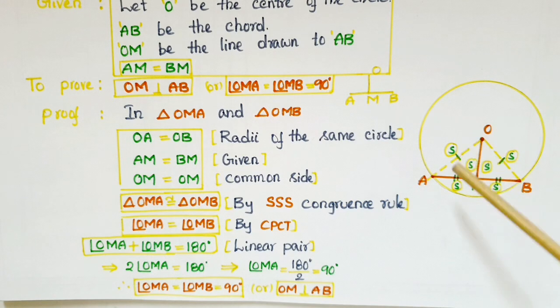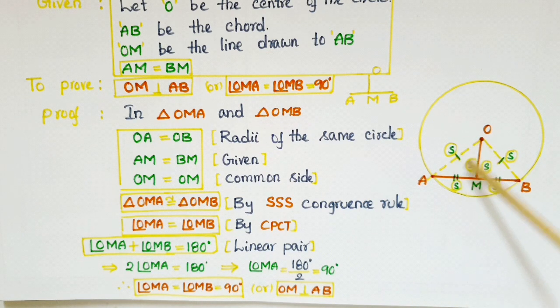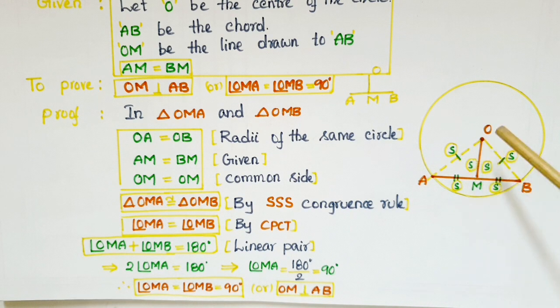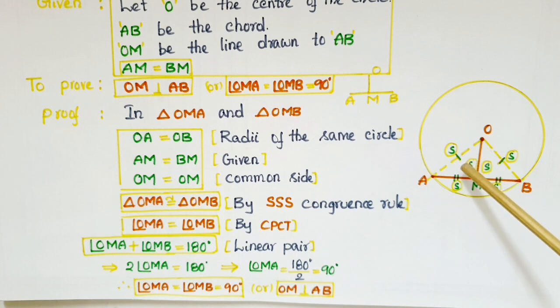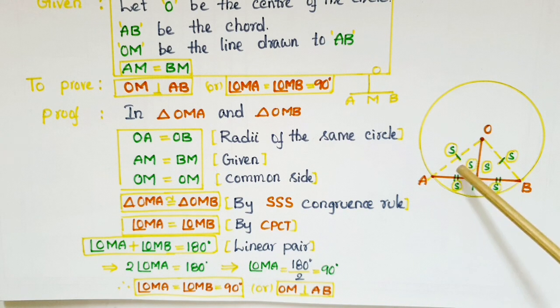Coming to the proof, we have to show that AM is equal to BM. If you observe here, AM and BM are sides of these two triangles. To prove these two sides are equal, we have to make these two triangles congruent. For that, we have to mark the equal parts of these two triangles.